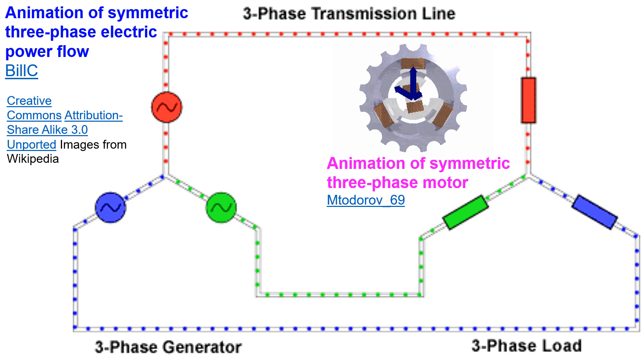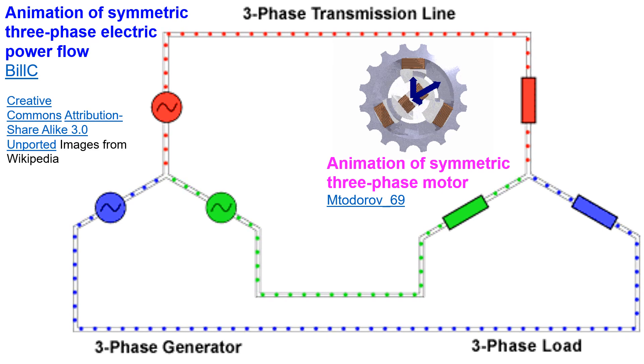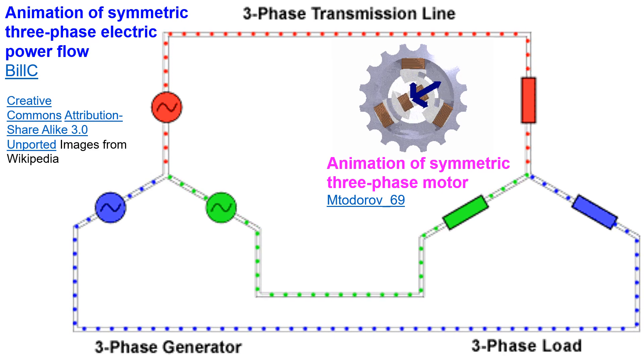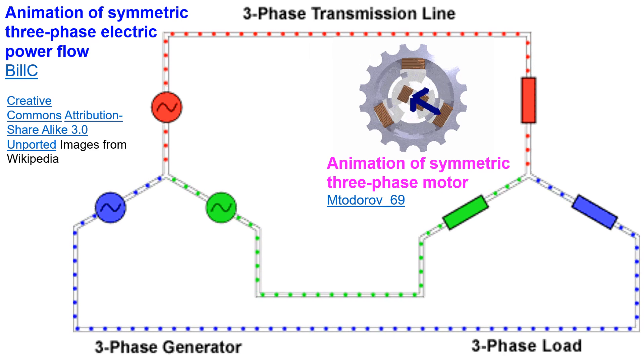In actual practice, generators have coil numbers in higher multiples of three to generate same frequency of AC with lower number of rotations per minute.